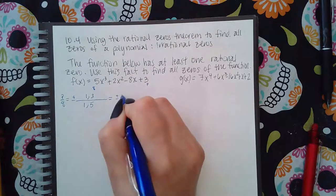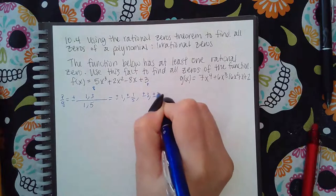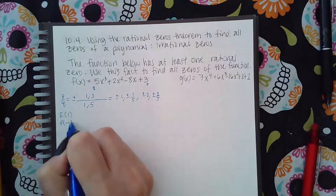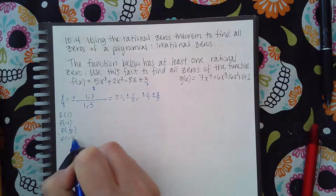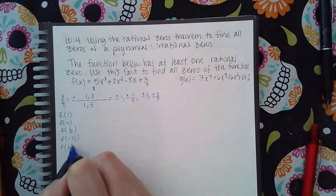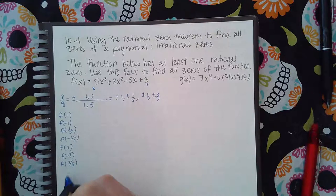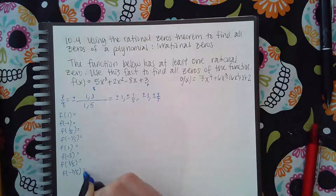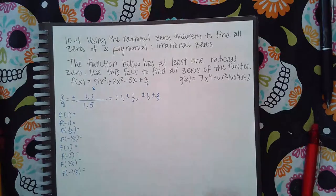So my possibilities are 1, one-fifth, 3, and three-fifths. How do I figure that out? I plug each one into the function and only stop after one of them works. I don't know how far down the list I have to go, so normally I just write them all and use the calculator to figure them out. Some people write one, figure it out, then write the next — it's all a choice.